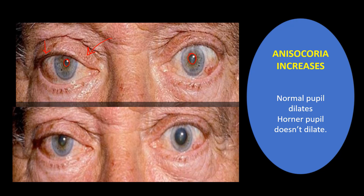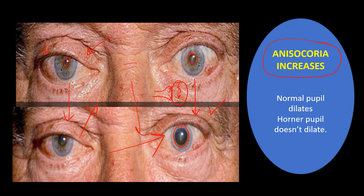In a normal eye, norepinephrine is present at the synapse, so cocaine blocks its reuptake and increases its concentration, causing pupil dilation. In Horner syndrome, the Horner pupil will not dilate, but the normal pupil will dilate. This results in an exaggeration of the anisocoria — the difference in pupil sizes increases. So in the cocaine test, the eye with Horner syndrome will not dilate, and this exaggerated anisocoria is the diagnostic finding.